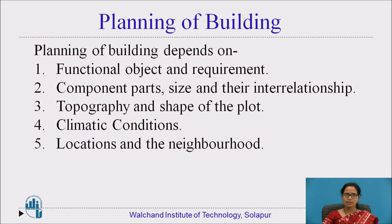In general, the planning of the building depends on: first, the functional object and requirement; second, the component parts, size and interrelationship; third, the topography and shape of the plot; fourth, the climatic conditions; and fifth, the locations and the neighborhood. The planning of the building will depend on all these points.